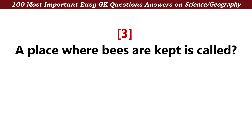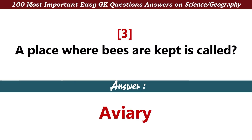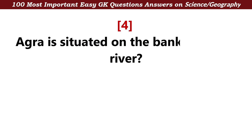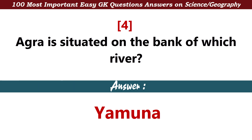A place where bees are kept is called — Answer: Aviary. Agra is situated on the bank of which river? Answer: Yamuna.